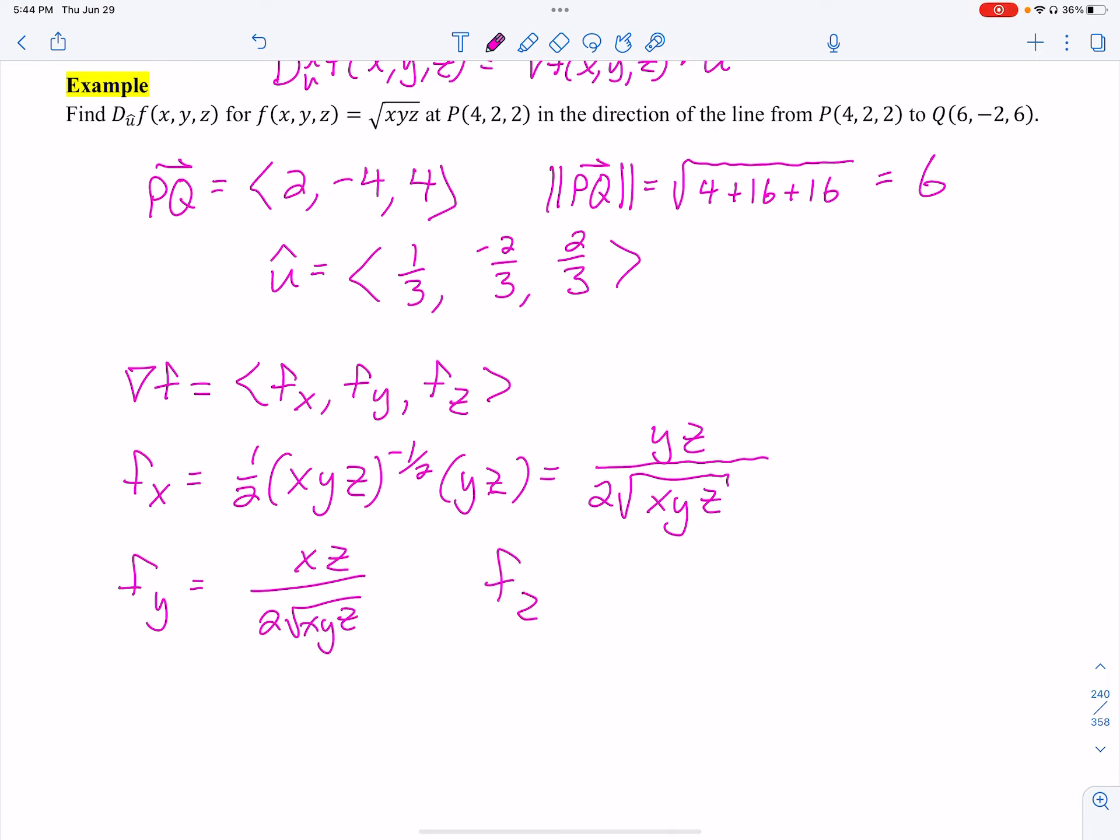And then we also have fz. Okay, fz is going to be xy over two times the square root of xyz. Sorry for my bad handwriting there. I'm, like, looking up, and I'm like, ooh, I got bad for a minute. All right, so I have those three. We have the point.